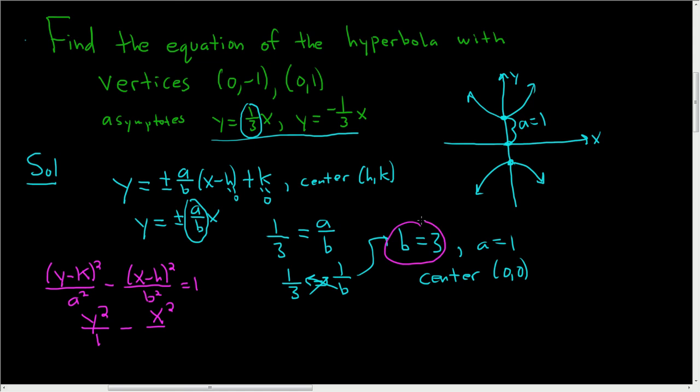And b is 3, so when you square b, you get b squared, which is 9. And this is equal to 1. So the final answer is y squared minus x squared over 9 equals 1.